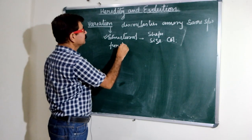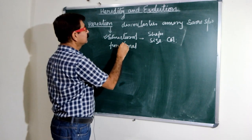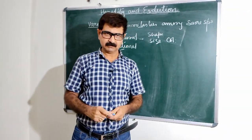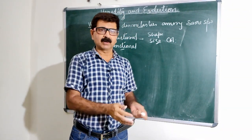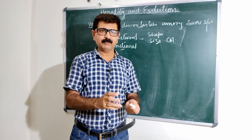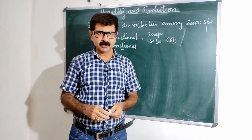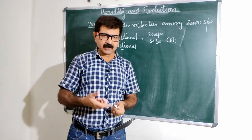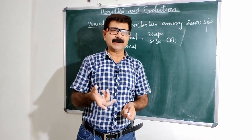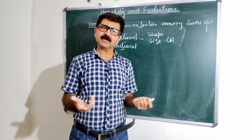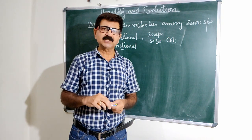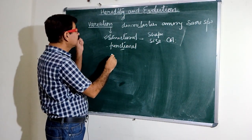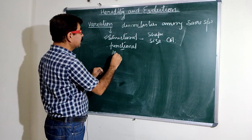After structural variations, there are functional variations. Ability also varies — few people have more ability and few people have lesser ability. Sometimes you may observe that someone's diet is two rotis and someone else's diet is ten — these are functional variations.